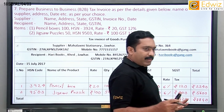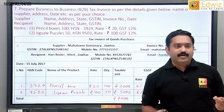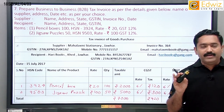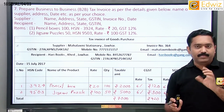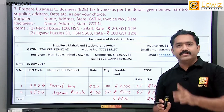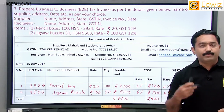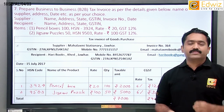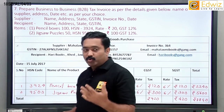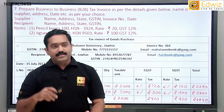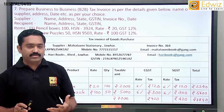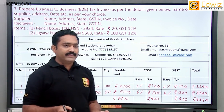GST rate for both items is 12%, so CGST = SGST = 6%. For pencil box: CGST = SGST = 6% of ₹2,000 = ₹120 each; total = ₹2,240. For jigsaw puzzle: CGST = SGST = 6% of ₹5,000 = ₹300 each; total = ₹5,600. Grand total CGST = ₹420, SGST = ₹420. Final invoice total = ₹7,840. Summary: B2C has one GST number (seller only); B2B has two GST numbers (seller and buyer).